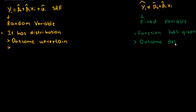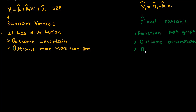For the fixed variable, the outcome is deterministic or exact. For one value of x_i we can obtain exactly one value of ŷ_i. We call this a one-to-one function — for one value of x_i it equals only one value of ŷ_i.